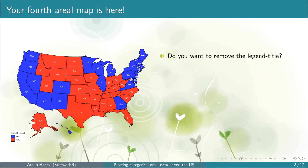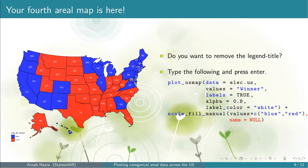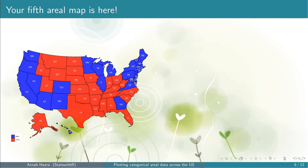Next, note that the legend title is not informative. If we mention the details in the plot title, adding a legend title would be providing repeated information. So you might want to remove the legend title. To do that, within scale_fill_manual add name equals to NULL. If you want to add some legend title, replace NULL with your chosen name. Now press enter. You get your fifth aerial map. You can see that the legend title is removed.